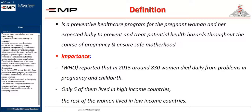To estimate the importance of having an effective antenatal care program, let's revise some figures issued by the World Health Organization. In 2015, around 830 women died daily from problems related to pregnancy and childbirth. Out of this number, only 5 lived in high income countries. The rest of the women, which is the majority, lived in low income countries. This means that complications related to pregnancy and labor represent a real significant health problem, especially in developing countries.